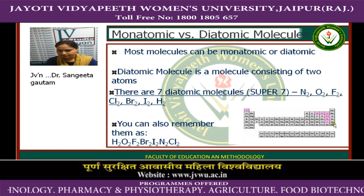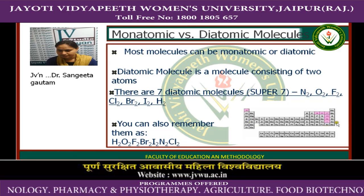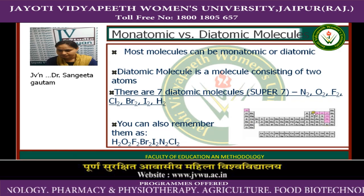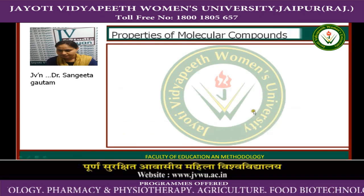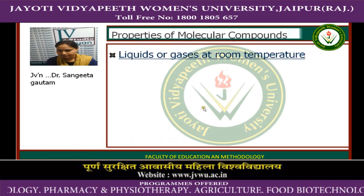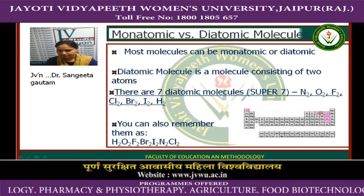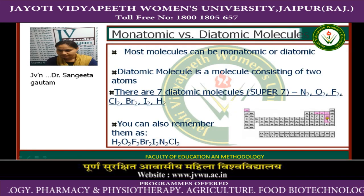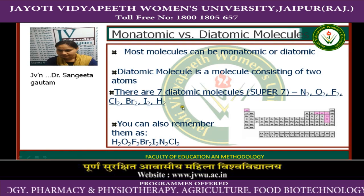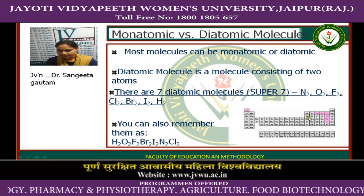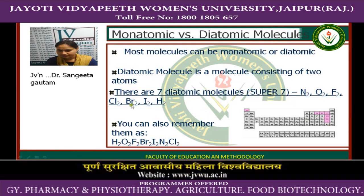This is the periodic table where you can see the positions of these diatomic molecules: H, N, O, F, Cl, Br₂, and I. These elements form diatomic molecules and are homo-molecular.